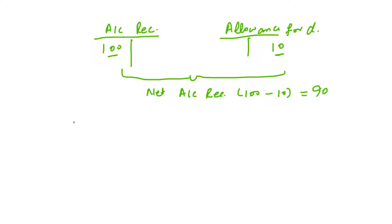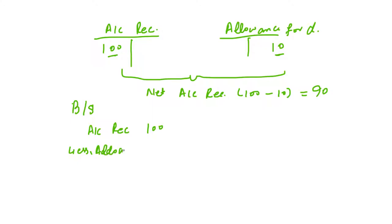Now, how do we represent the contra account on the balance sheet? In the balance sheet, first we write the actual account — accounts receivable at 100 — then we subtract the contra account balance. In this case, the allowance for doubtful accounts is the contra account, and we subtract it: 100 minus 10 equals 90. That 90 is our net accounts receivable balance.